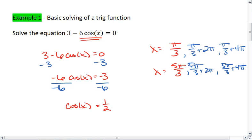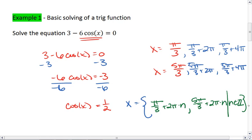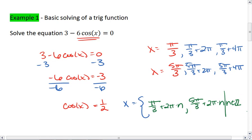What we get, then, is something you can write like this. The x is going to be all the solutions of the form pi-thirds plus 2 pi times n and 5 pi-thirds plus 2 pi times n such that n is an integer. And that would be your final answer.